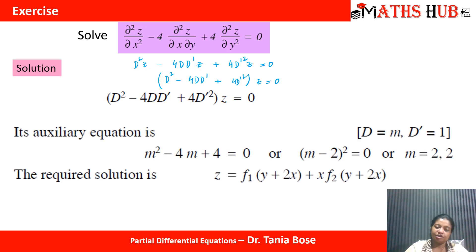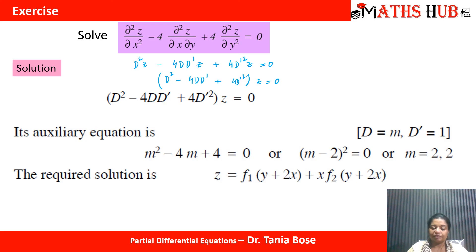Putting D = m and D' = 1 gives m² − 4m + 4 = 0, which gives two equal roots: m = 2, 2. So the complementary solution is: z = f₁(y + 2x) + x·f₂(y + 2x).